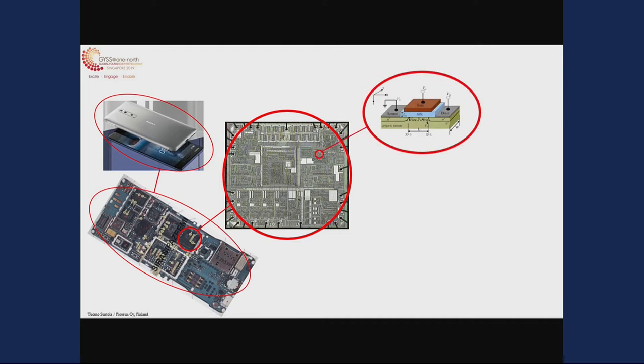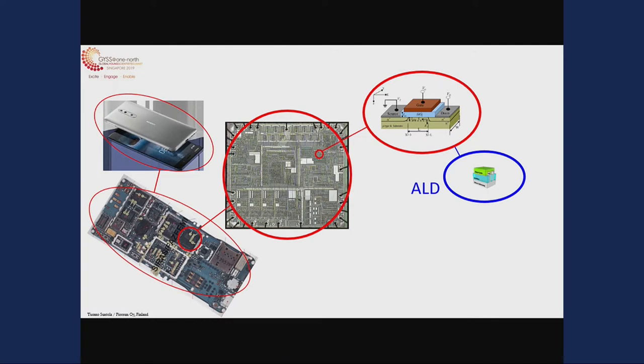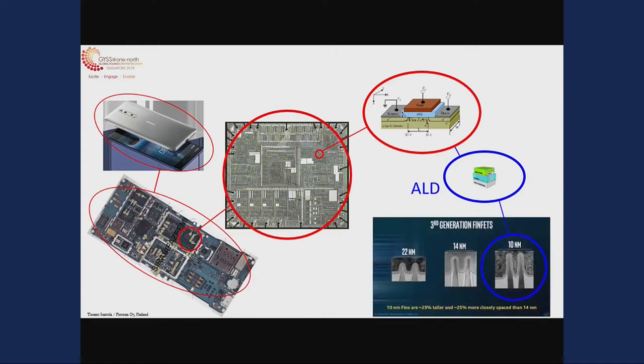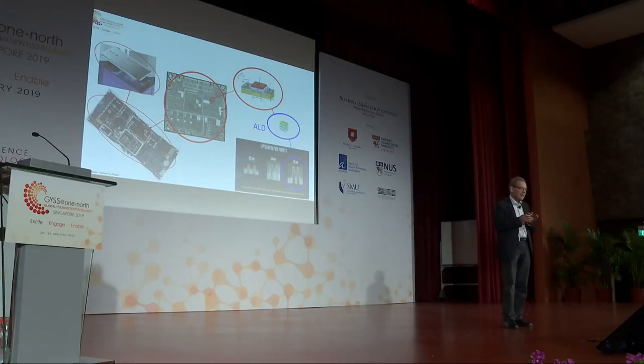Traditionally, the transistors were manufactured on a smooth surface — it's called the planar technology. With ALD, now we are able to squeeze the size of the transistors. One part of the squeezing process is to use three dimensions, so that instead of putting only one in one plane, we can make structures with three-dimensional features. The individual transistor has channels surrounded by the gate electrode, which then very effectively controls the current flow through the channel.